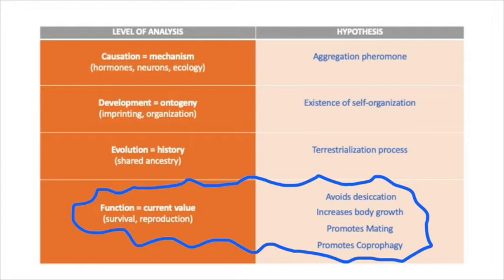Last but not least, aggregation of woodlice promotes coprophagy. As mentioned in module 10, vultures consume feces of ungulate grazers for their rich antioxidant content. In the case of woodlice, they can gain additional calcium, which is important for their exoskeleton. By the way, this is probably one of the reasons why cannibalism occurs.